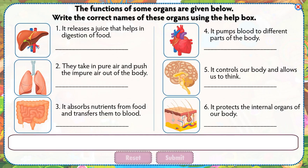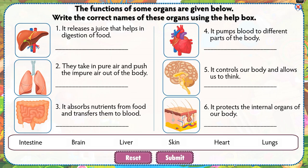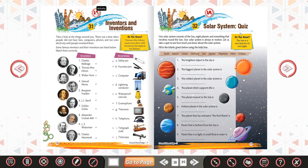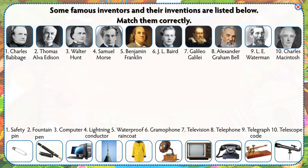The functions of some organs are given below. Write the correct names of these organs using the help box. Some famous inventors and their inventions are listed below. Match them correctly.